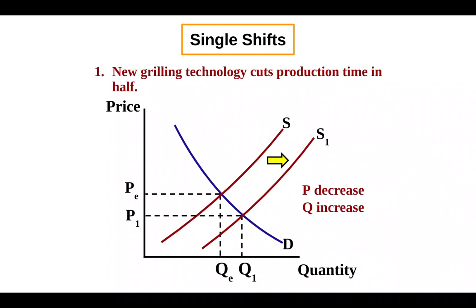So in this example, because of that increase in technology, that is resulting in a supply shift to the right. One pro tip here, that if supply shifts by itself, so we call a single shift, when only one curve is moving, price and quantity will change in the opposite direction. So that's a good way to check your work.